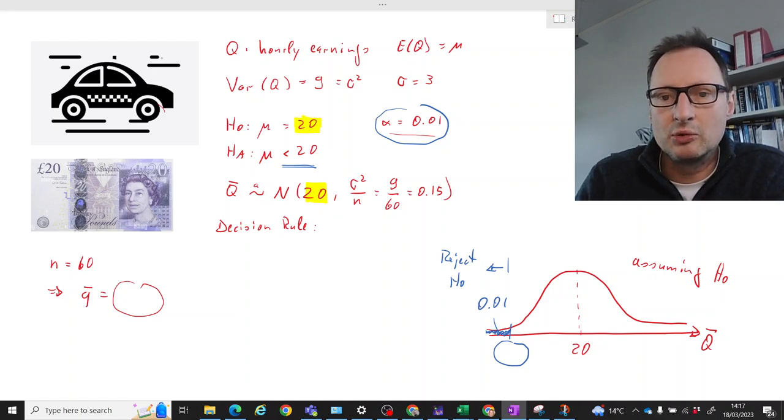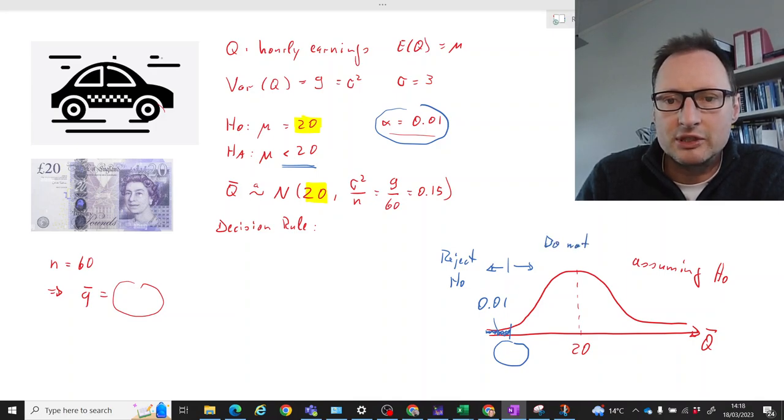However if we get a Q bar that is larger than that then we will not reject H naught. So we sometimes call this area here the rejection region.